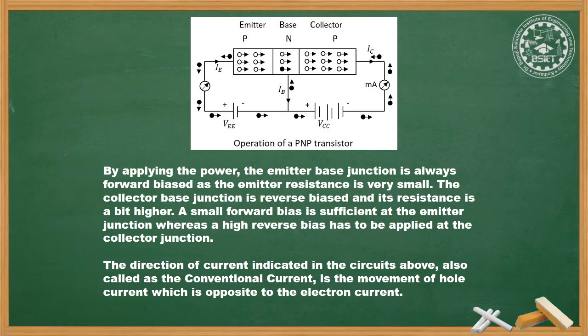In the diagram, hollow circles represent holes and solid dots represent electrons. Electrons flow from the negative terminal to the positive terminal, and holes flow from the positive terminal to the negative terminal. The relation remains the same: IE = IB + IC. The emitter-base junction is always forward biased as emitter resistance is small, while the collector-base junction is reverse biased with higher resistance. A small forward bias is sufficient at the emitter junction whereas a high reverse bias is applied at the collector junction. The current direction indicated in the diagram is conventional current, which is the movement of hole current — opposite to electron current.